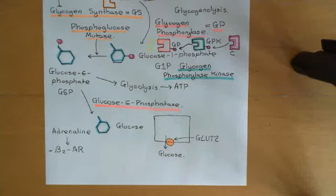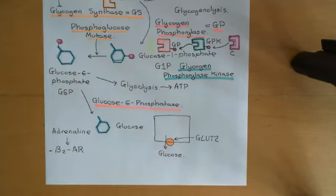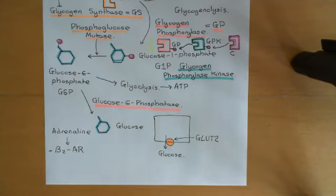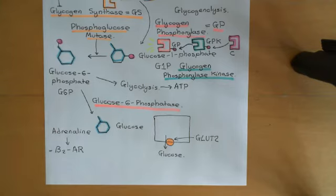Welcome back to this next video discussing cyclic AMP signaling. We're currently discussing physiological examples of where the GS cascade is important. The physiological examples we're looking at are the effect of adrenaline, also called epinephrine, released into the bloodstream on tissues including skeletal muscle, the hepatocytes of the liver, and the adipocytes. So far we've seen that by acting on the beta-2 adrenergic receptor and activating the GS cascade leading to activation of protein kinase A, adrenaline promotes glycogenolysis in skeletal muscle cells and hepatocytes.